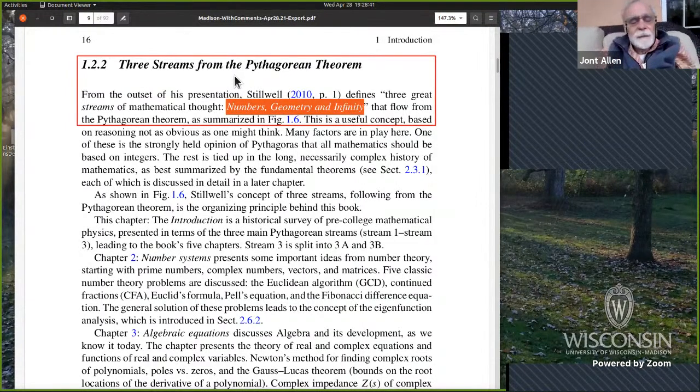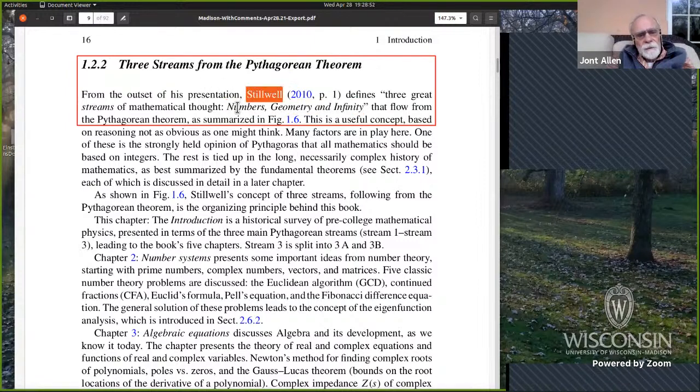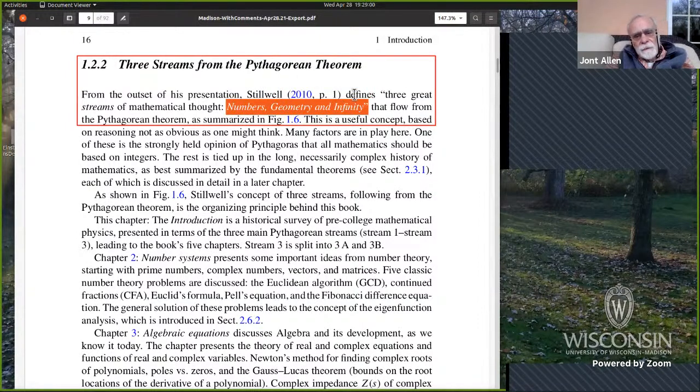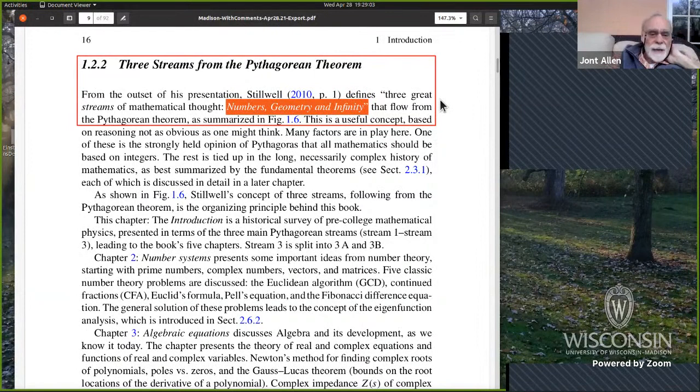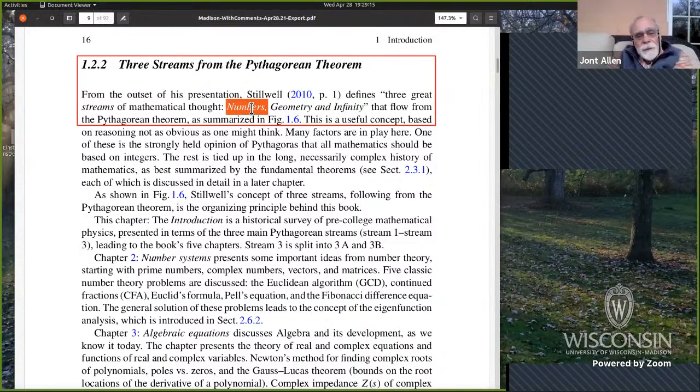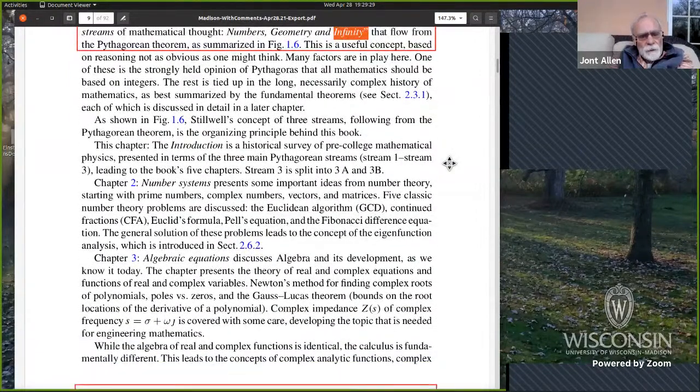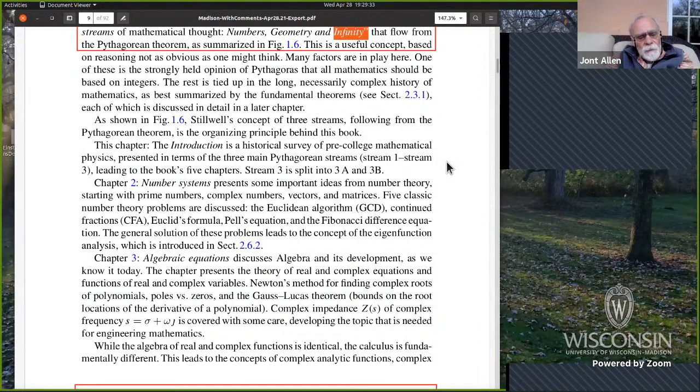Stillwell identifies three streams in mathematics, the three great streams of mathematical thought: numbers, geometry, and infinity. And so my friend said, why don't you follow up on these three streams and organize your book around that? And I said, that's exactly what I'm going to do. So I have basically three sections: number theory, geometry, and infinity is calculus.